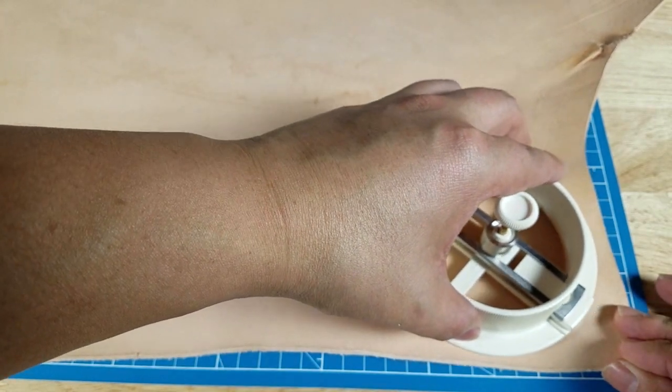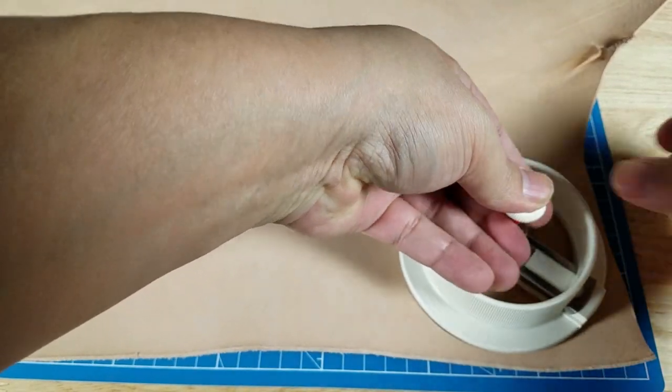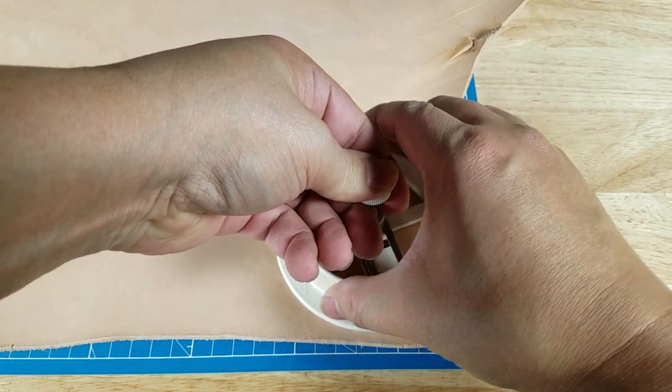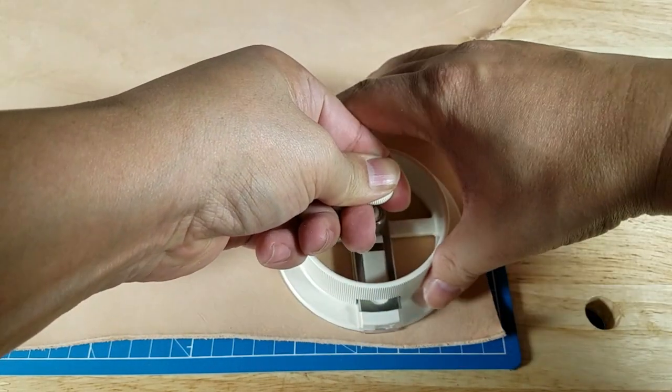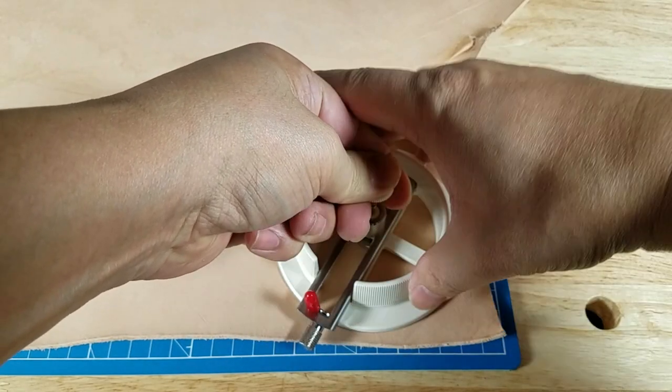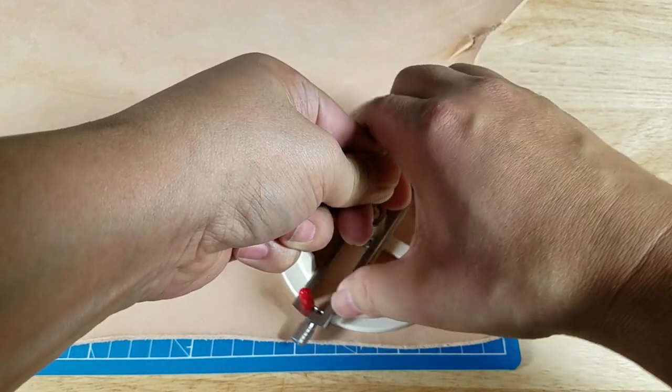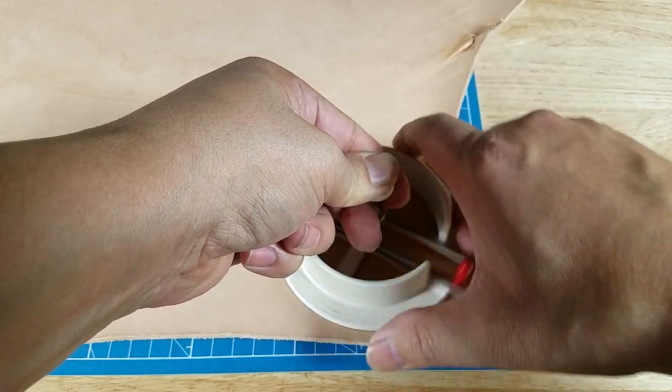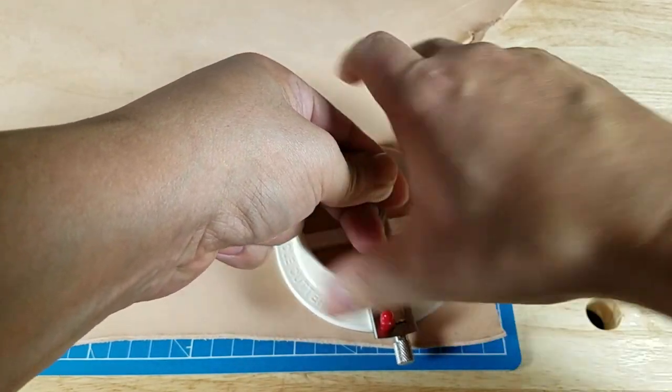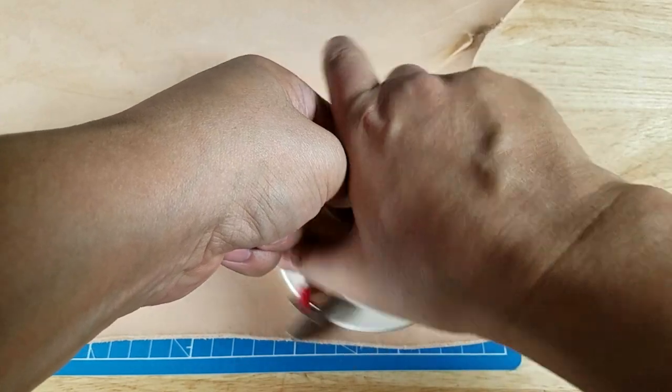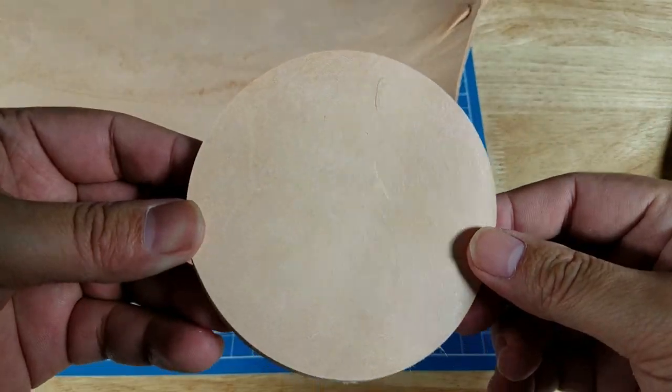I'm gonna hold this down with my left hand and just turn it. You can hear it cutting. Once it stops making that sound, you know it's through. Maybe one more turn. All right, that's got it. That's step one. Let me show you what I'm gonna do next.